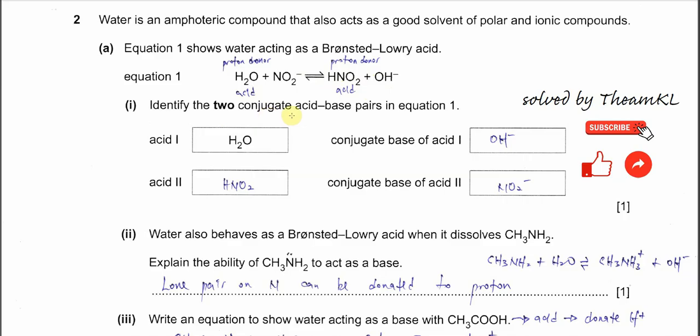Part 1: Identify two conjugate acid-base pairs in equation 1. Already given H2O, so you need to find the conjugate base for acid 1. Obviously it's hydroxide. Because H2O is a proton donor, after donating one proton, it forms hydroxide. This is the conjugate base for H2O.